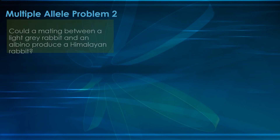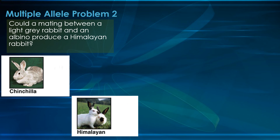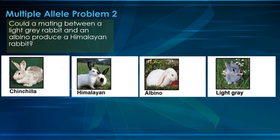We've got a multiple allele problem involving rabbits. It's asking about a mating between a light gray rabbit and an albino — could this produce a Himalayan? Here is the light gray rabbit, and we're going to combine it with an albino. Let's take a look at the genetics on these rabbits.